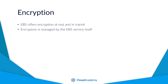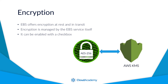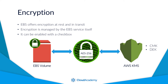All you are required to do is select if you want the volume encrypted or not during its creation via a checkbox. The encryption process uses the AES-256 encryption algorithm and provides its encryption by interacting with another AWS service, the Key Management Service known as KMS. KMS uses customer master keys (CMKs) to create data encryption keys (DEKs), enabling the encryption of data across a range of AWS services such as EBS. Any snapshot taken from an encrypted volume will also be encrypted, and any volume created from that encrypted snapshot will also be encrypted.